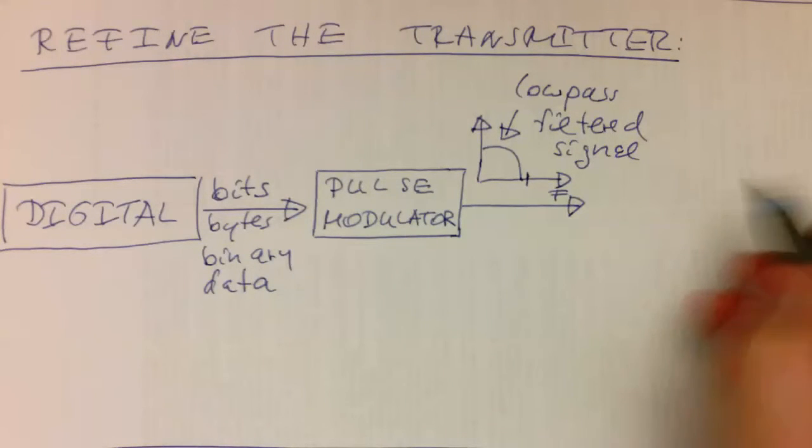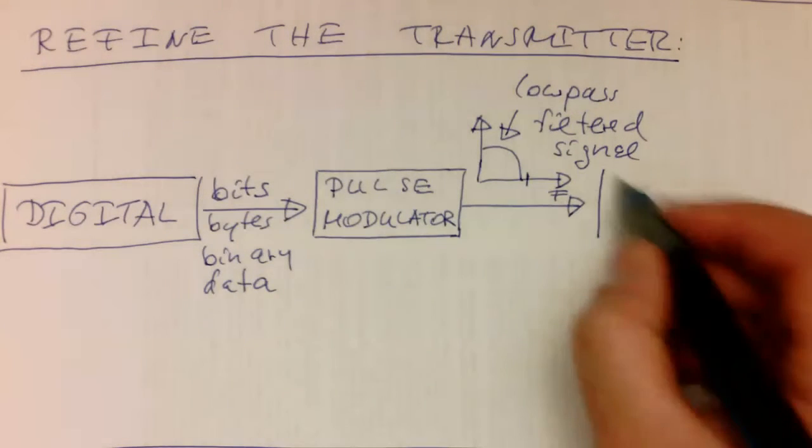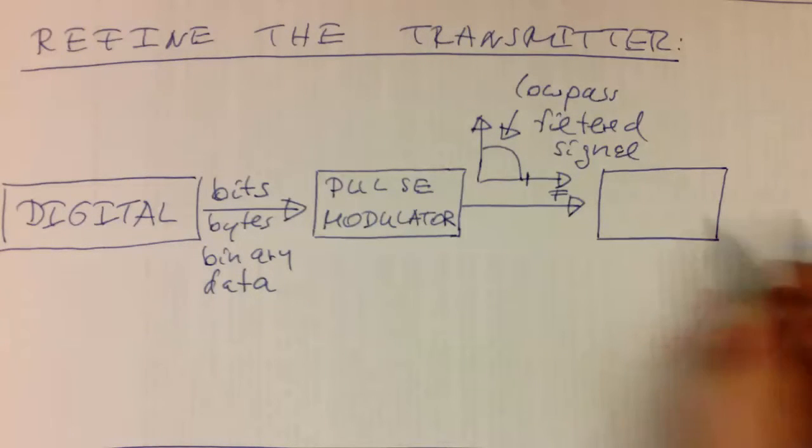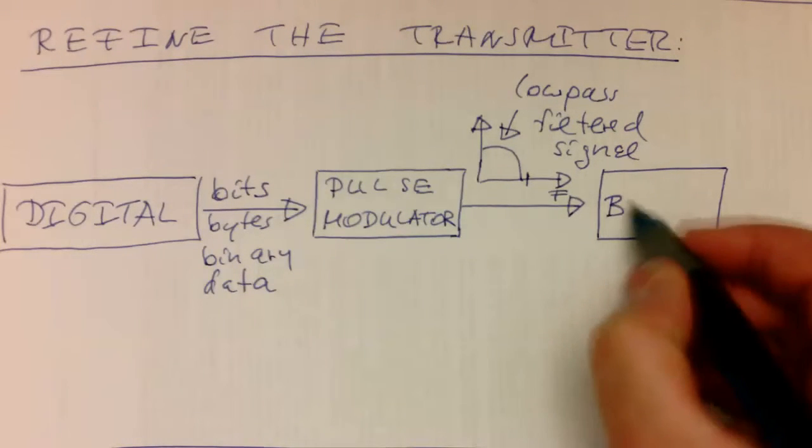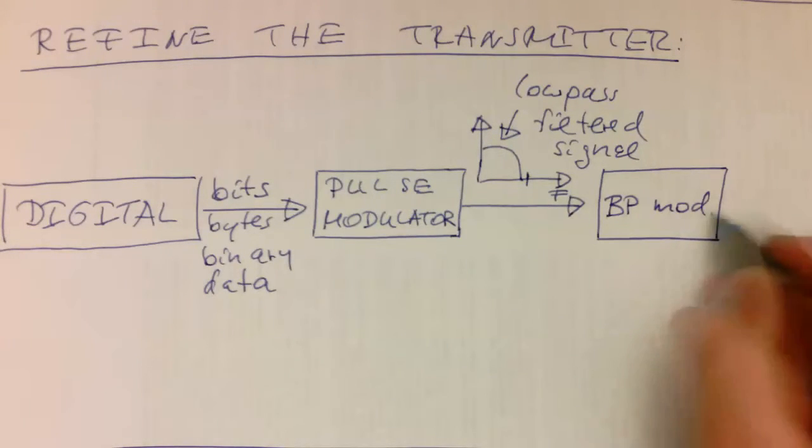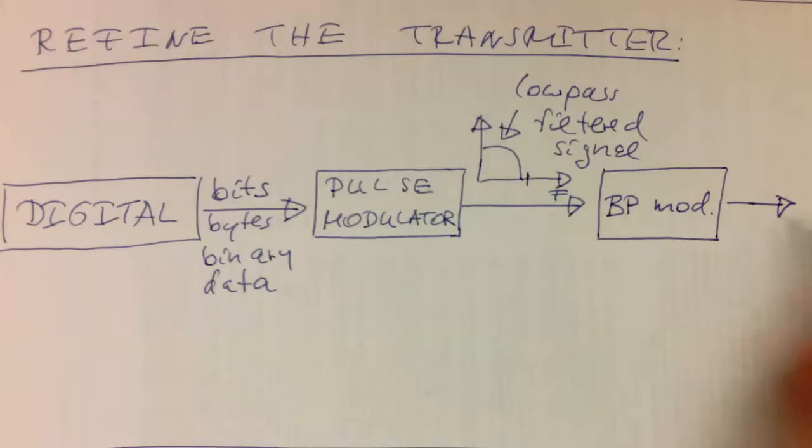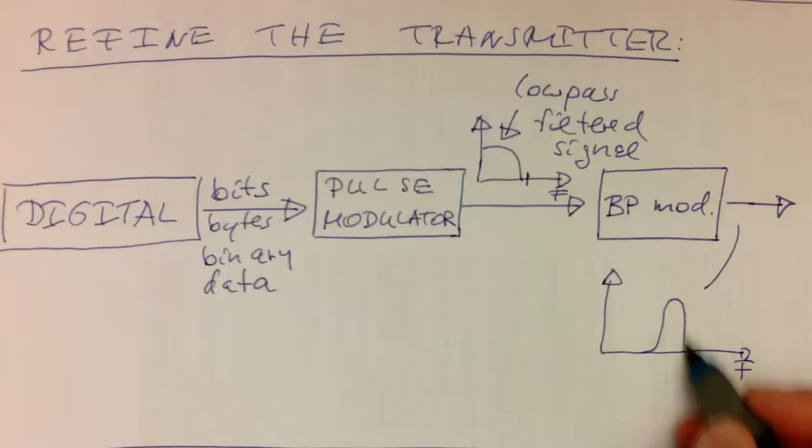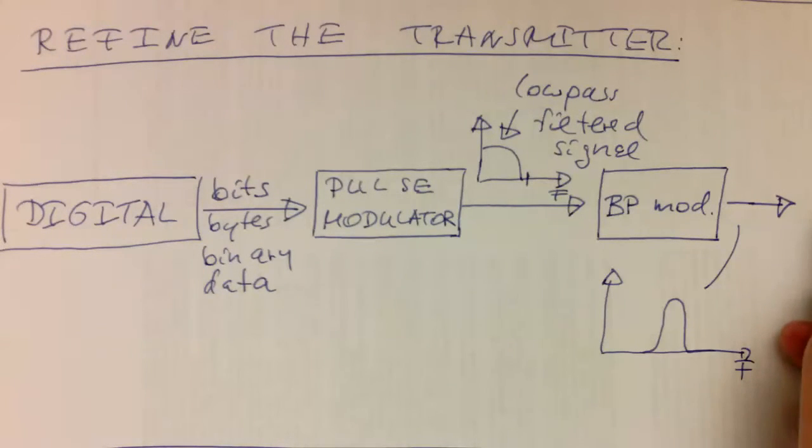And then after that, we have a so-called band-pass modulator. And then this turns it into a band-pass signal here. So at this point here, if this is again frequency, and this is our signal which is coming out here, then this will look like this, what we are expecting. And we can send this out to our aerial and turns into RF energy.